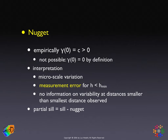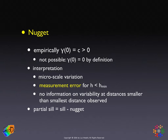There's a third related concept: the partial sill. This is important because some software requires you to specify initial values for the sill, while other software wants initial values for the partial sill. The partial sill is the difference between the sill — the total variance of the process — and the nugget.